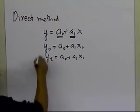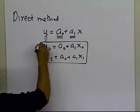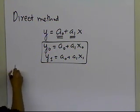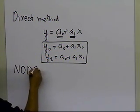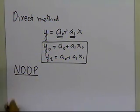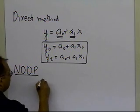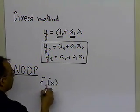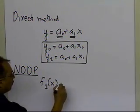So you would set up two equations, two unknowns, solve for a0 and a1, and that gives you the linear interpolant. But in Newton's divided difference polynomial method, we're still using a first order polynomial, but it is used in a different form. The form is f1(x), where f1 stands for the first order polynomial.